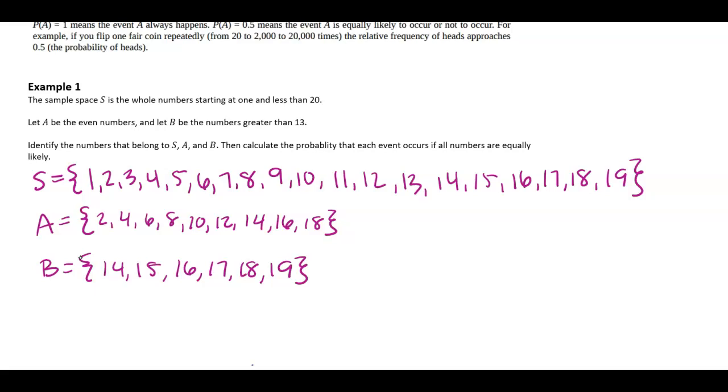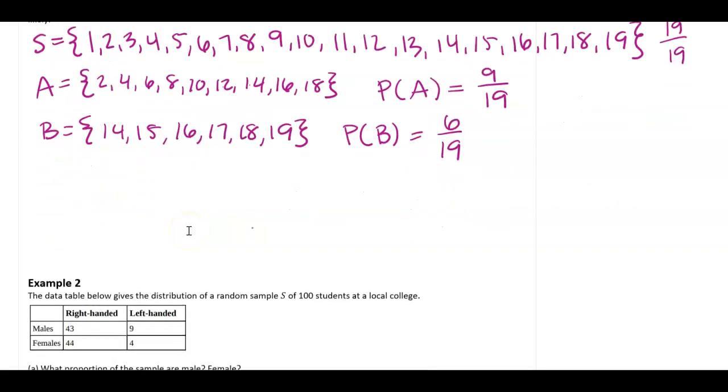So the probability of the sample space, well, that would be everything. The probability that you get all the numbers is all the numbers. Now, the probability that we get an even number would be the number of outcomes 1, 2, 3, 4, 5, 6, 7, 8, 9 out of the total number possible. The probability of B would then be 1, 2, 3, 4, 5, and 6 out of the total number possible. It does not matter if you leave your probabilities as fractions or percents or decimals. They're all going to be the same.